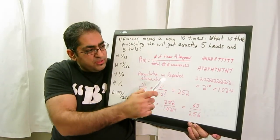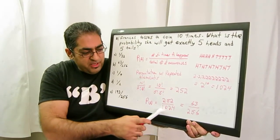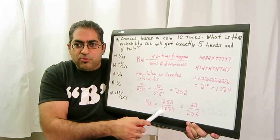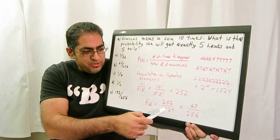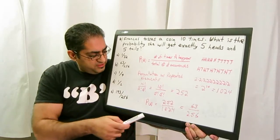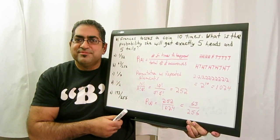The total number of occurrences is 1024. So the probability of A is 252 over 1024. It's obviously not here in our answer choices, so we have to reduce. And when you reduce it, you get 63 over 256, which is right here. The answer is B.